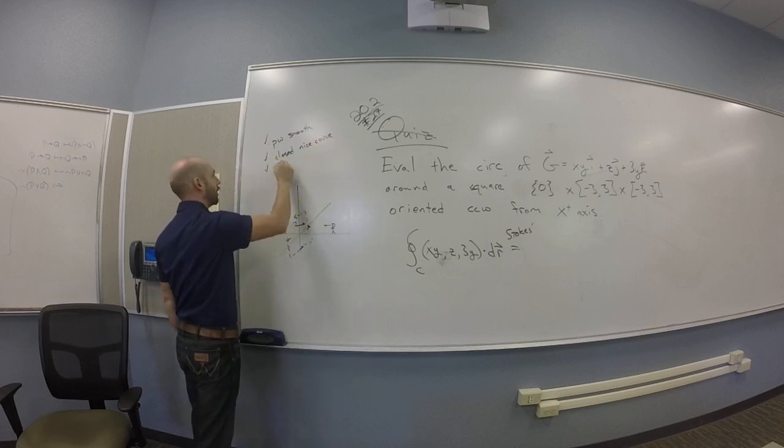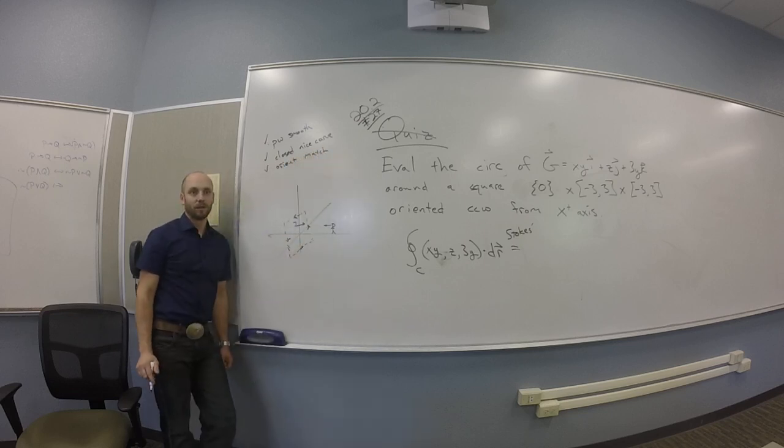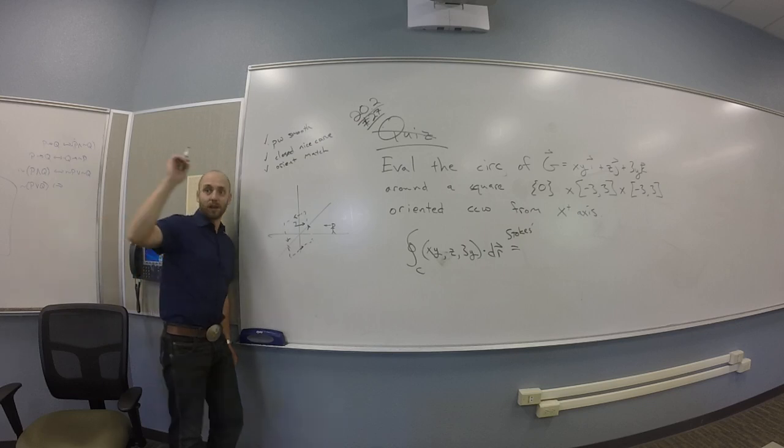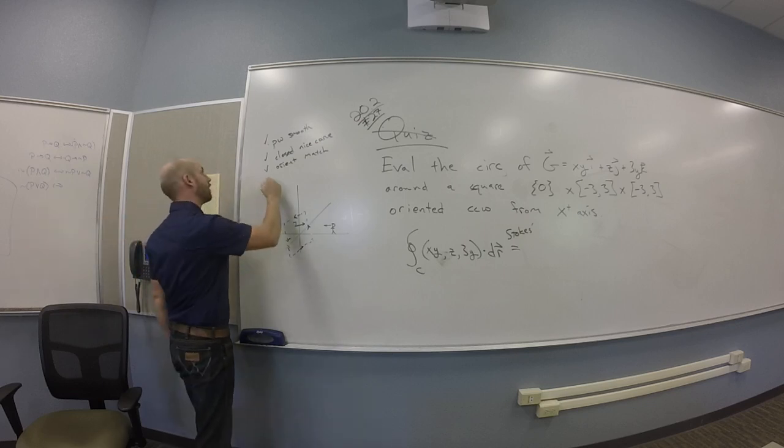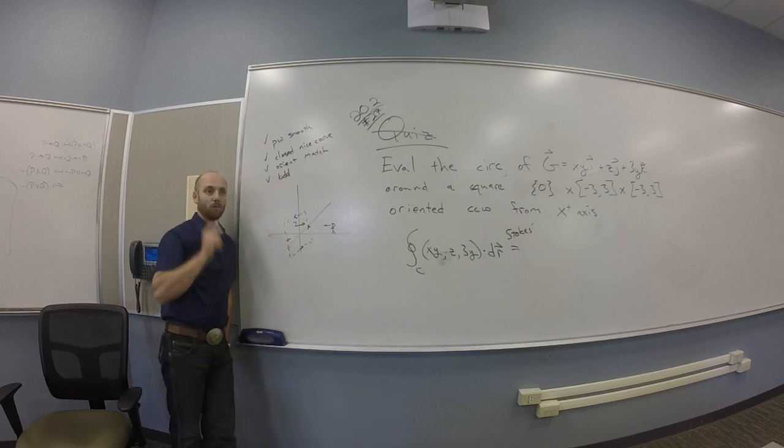So I check closed nice curve. I check orientations match. What else do I need? Bounded. Good. You need bounded stuff. Everything has to be bounded. Check, bounded. What else?